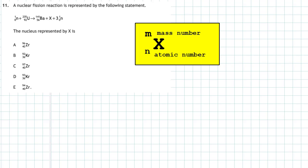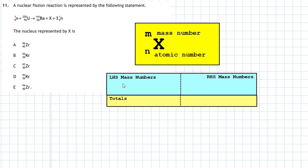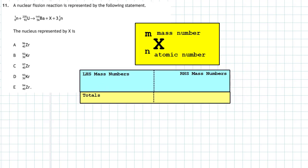In a nuclear reaction equation, the key fact is that the sum of the mass numbers on the left-hand side must equal the sum of the mass numbers on the right-hand side. We make up a little table. On the left-hand side we have a neutron (mass number 1) plus 235, giving a total mass number of 236.